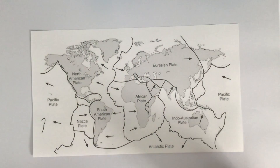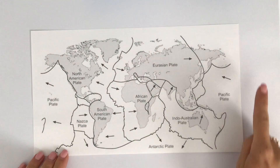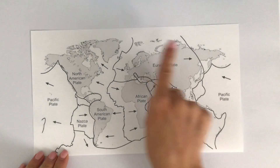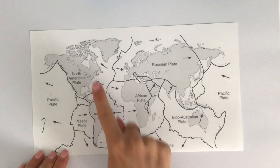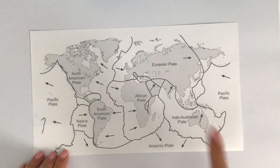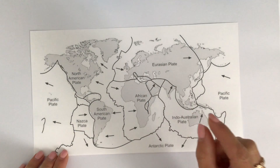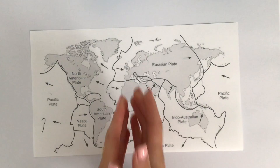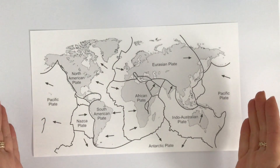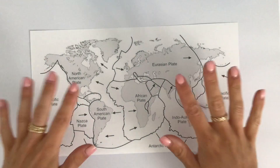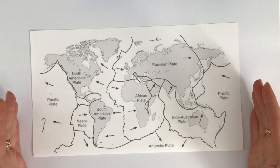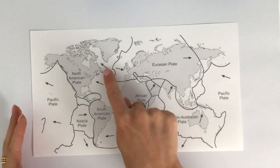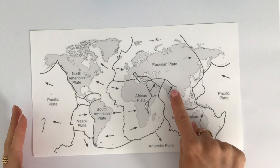Before we jump into learning about what happens at plate margins, we need to understand that the earth's surface is broken into various tectonic plates. There are seven major tectonic plates, and then we have minor plates and very micro plates that we probably won't be able to see on this map. This is really important when it comes to plate margins and plate boundary movement, because we need to understand the direction these plates are moving.